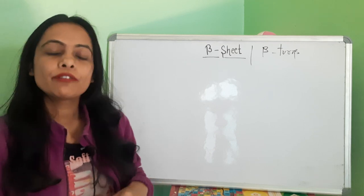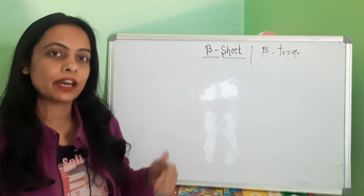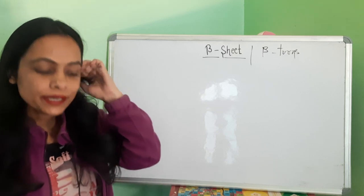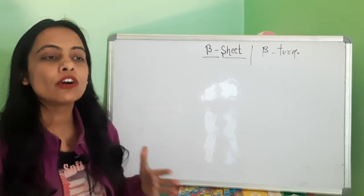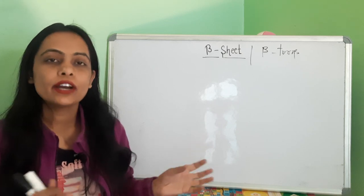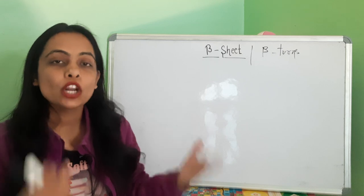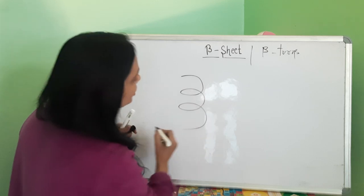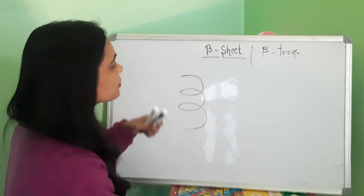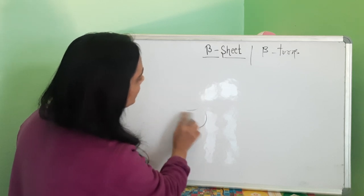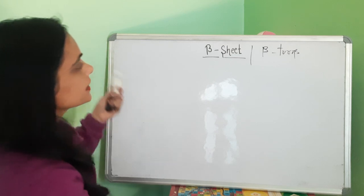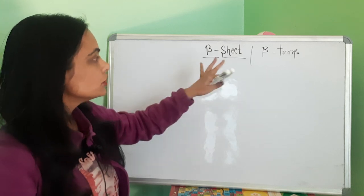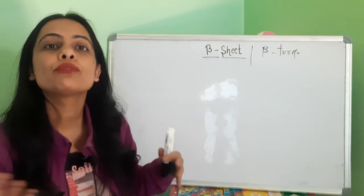We will discuss the beta-sheets one by one. Alpha helical structure is named alpha helix because the polypeptide chain arranges itself in a helical structure. The helical structure forms, and that's why the structure is known as alpha helix. The second structure is given the name beta, but the key difference is that it is a sheet-like structure, not helical.